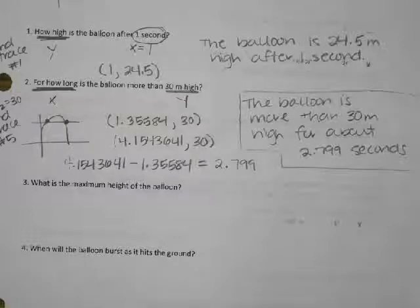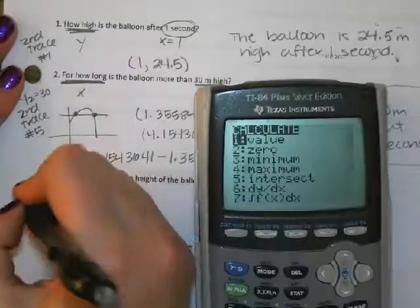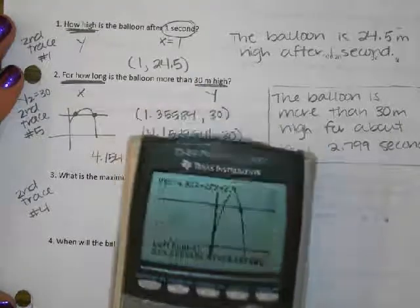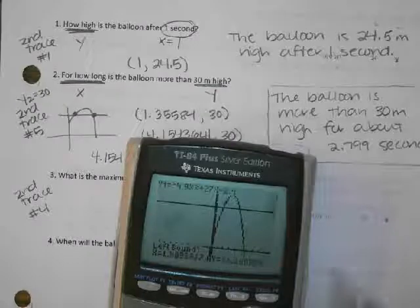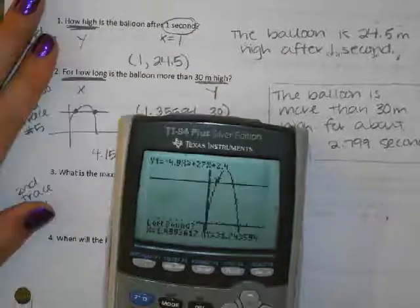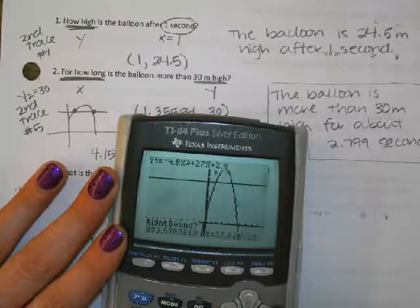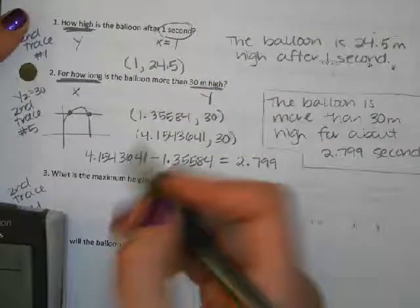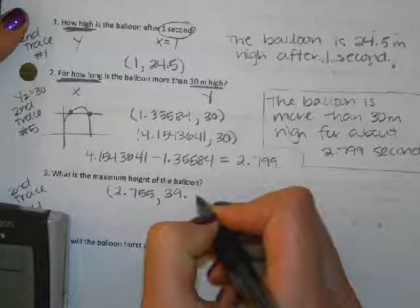How do we find the maximum height of the balloon? Second trace, number 4. It's asking for left bound — so my cursor needs to be on the left side of the mountain top, then right bound on the right side. The guess is not the answer — press enter one more time. The maximum point was (2.755, 39.594).